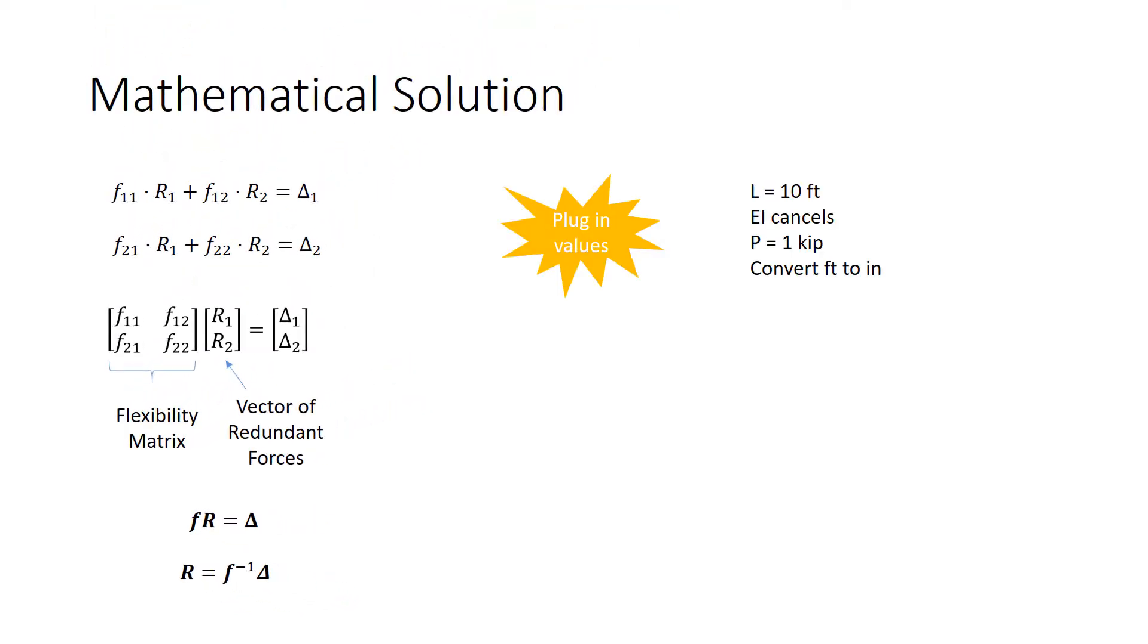To plug in values, we only need the given quantities. L is 10 feet. EI will cancel. The load P, the applied load, is 1 kip. We need to make sure to convert feet to inches. It's not really required here because EI cancels, but typically EI is given in kips and inches, so we need to make that conversion. These are all the values that are given for the individual terms. You can see that this information is enough to calculate numerical quantities for all of these terms. We can plug these into the matrix formulation, give it to Excel, give it to MATLAB, give it to your handheld calculator.